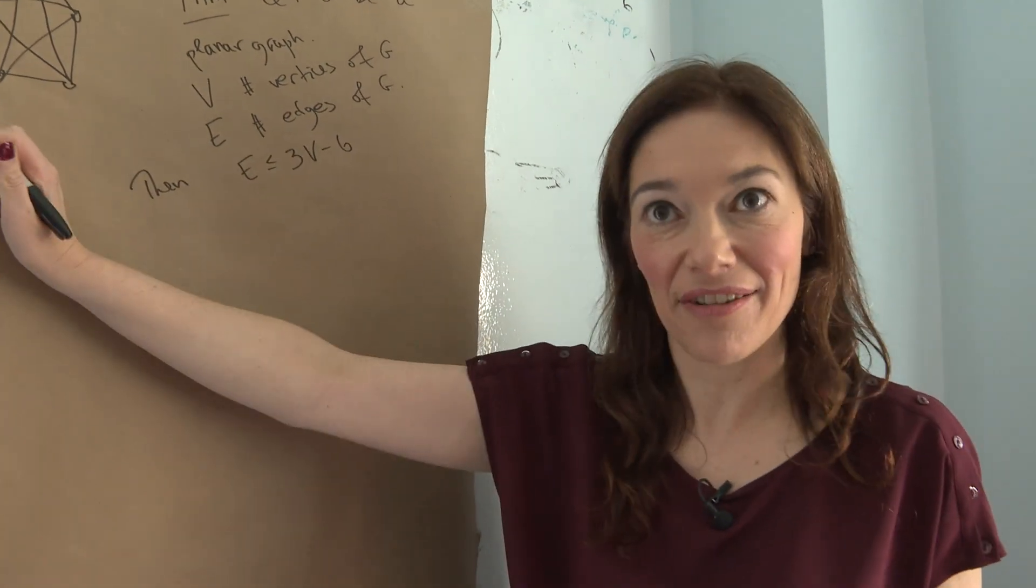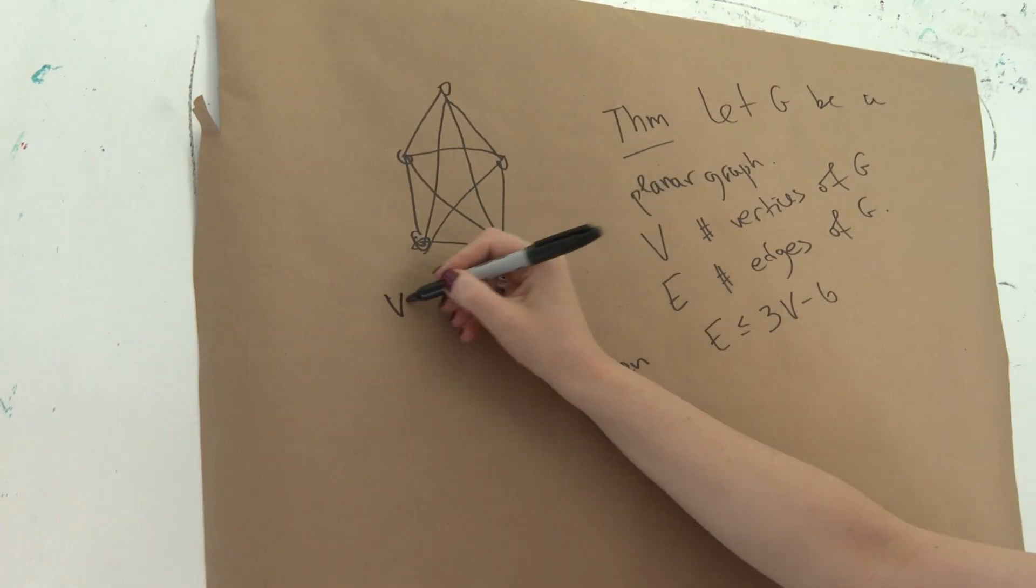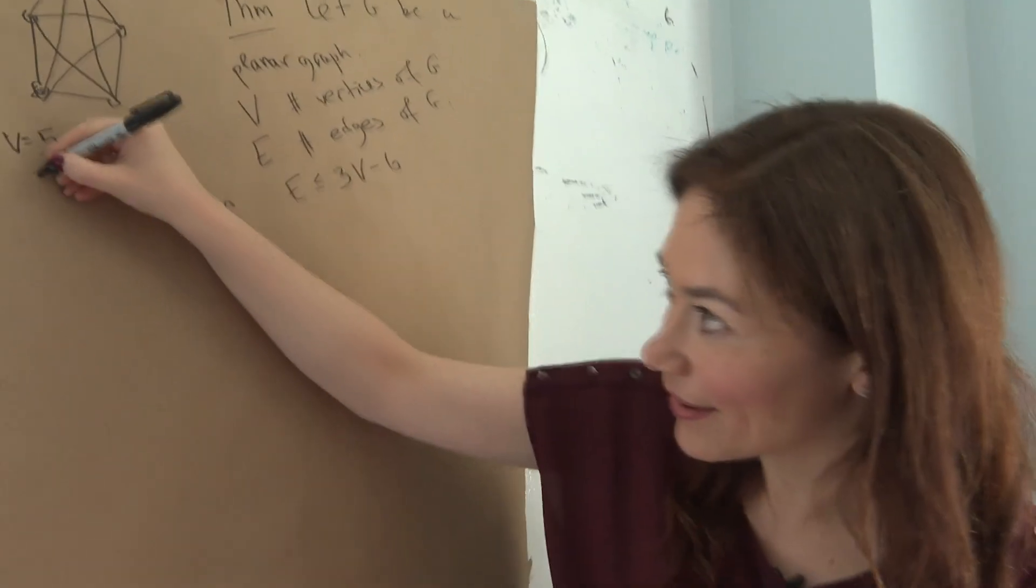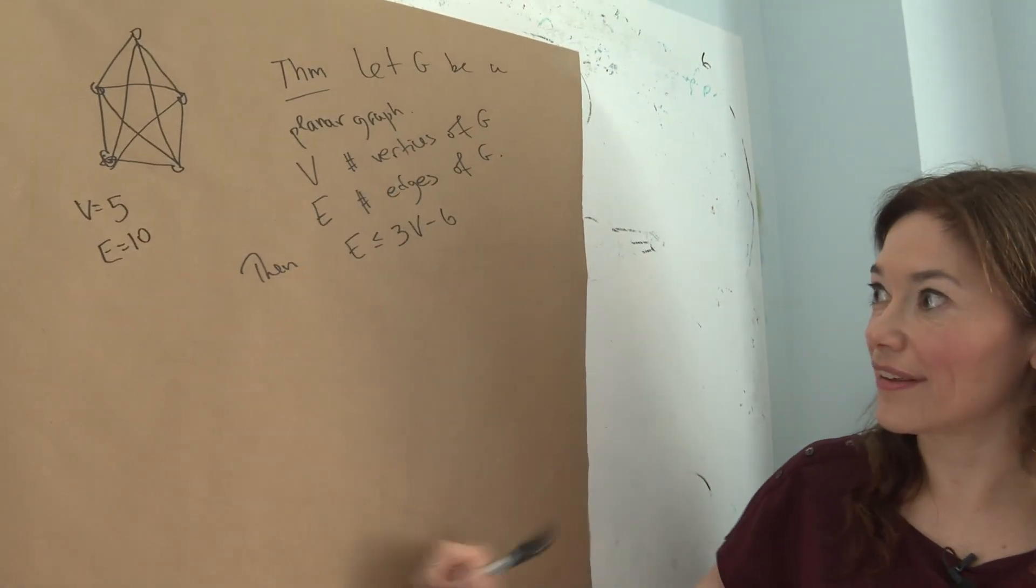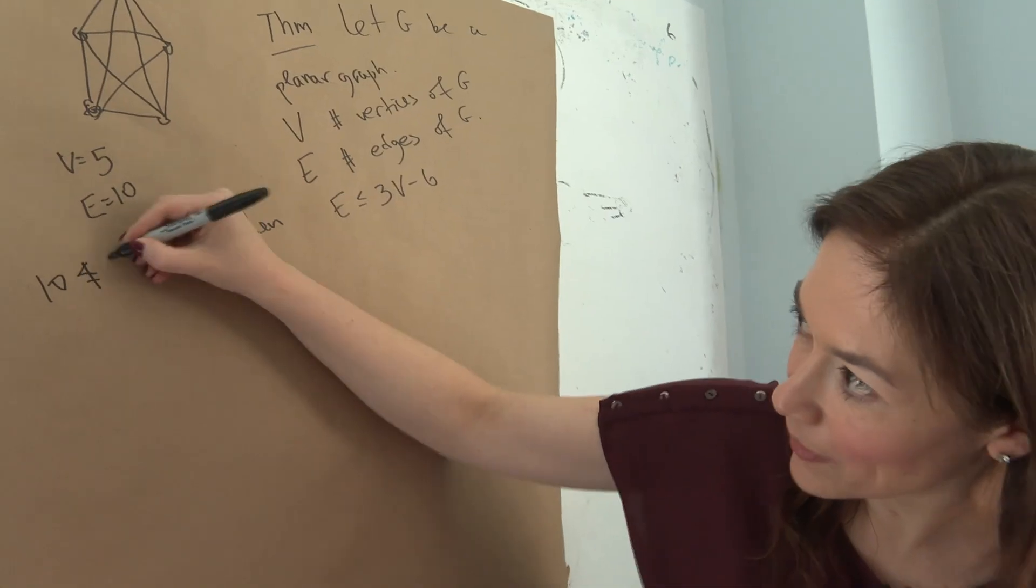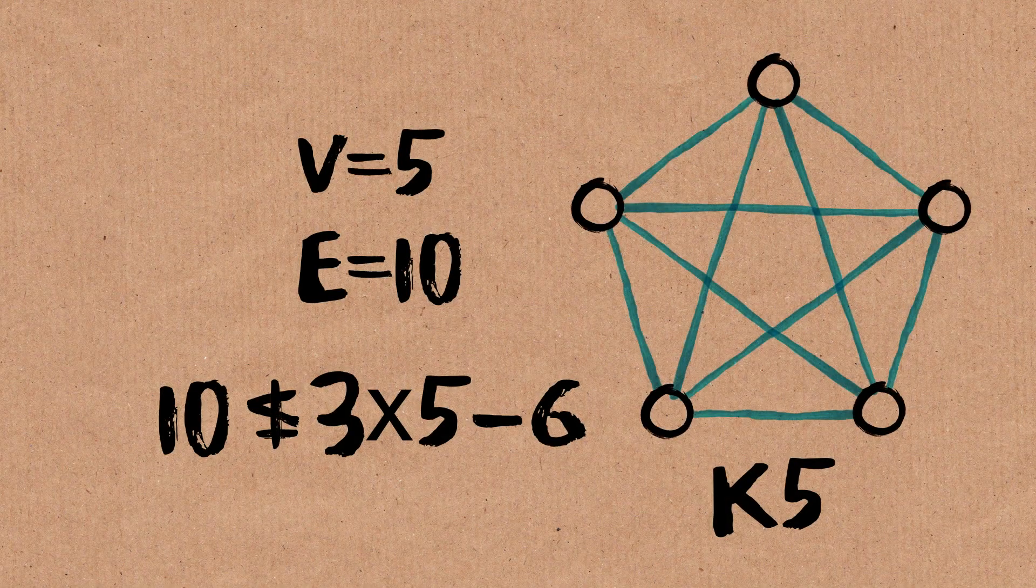So now let's check that this guy fails, because it has 5 vertices. And the number of edges, so all pairs of 5 vertices, that's 10 edges. And now you can see that 10 is not less or equal than 3 times 5 minus 6.